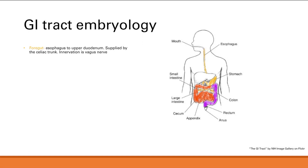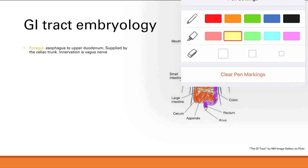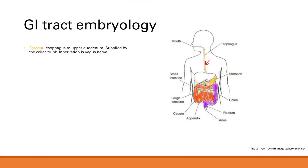The foregut is the precursor to what will eventually become the esophagus all the way to the upper duodenum, outlined here in yellow. It also gives rise to all the other organs that are not part of the intestine — the liver, pancreas, and gallbladder. All of those are from the foregut.